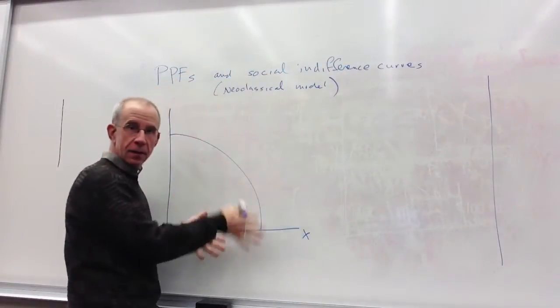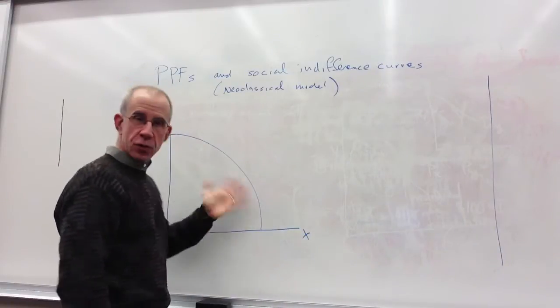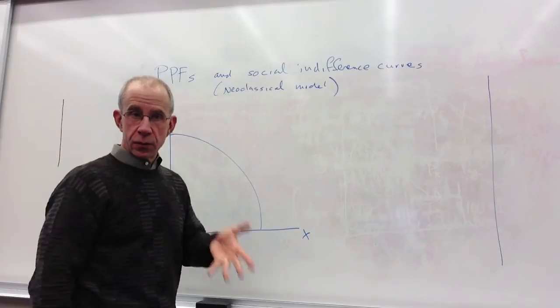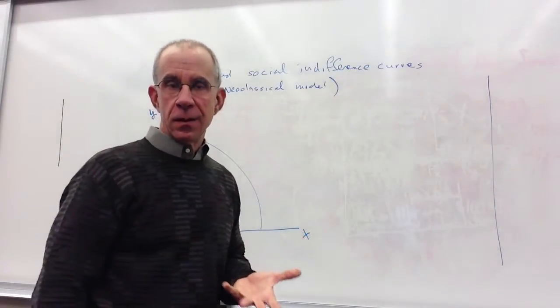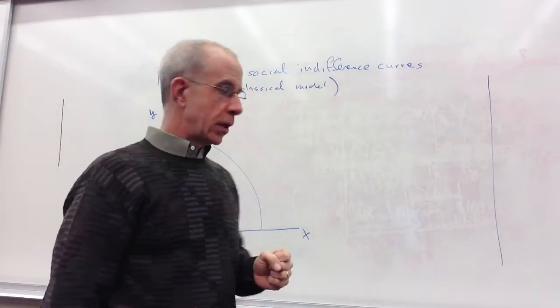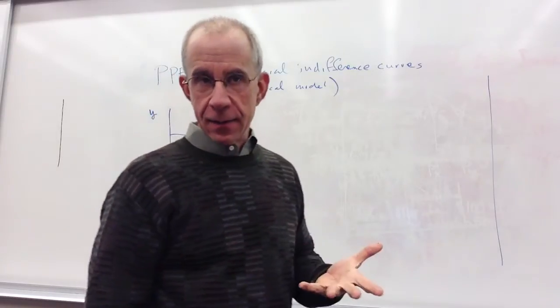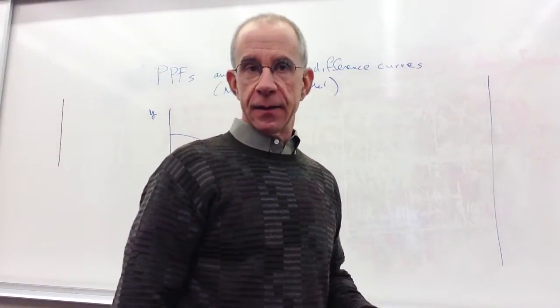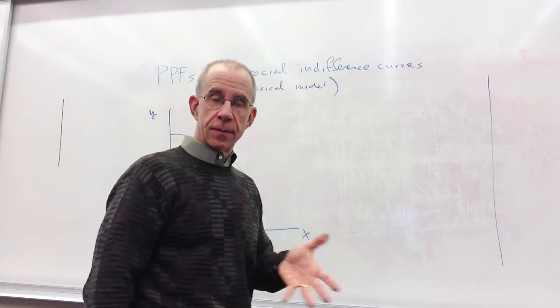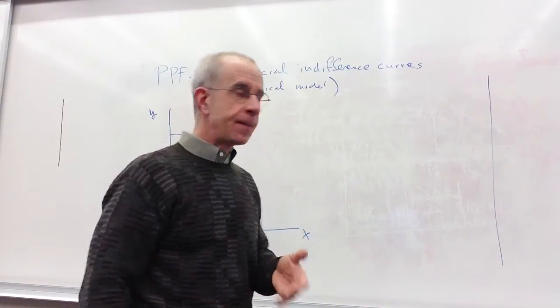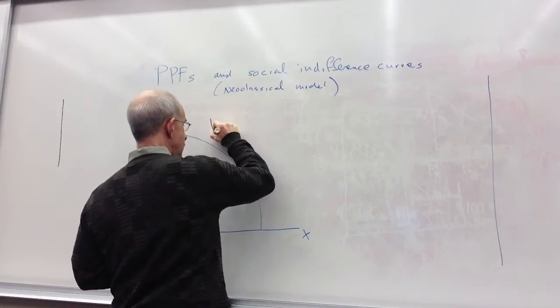So we've got this PPF, bowed out, neoclassical PPF, and we've talked about the trade-offs between the two goods on the production side. So in autarky, how is it that we determine how much to produce? Well, it's going to depend on what the demand side of the economy wants. So supply and demand need to be equal across the two sectors. So here, let me draw this, and then I'll give you some intuition.